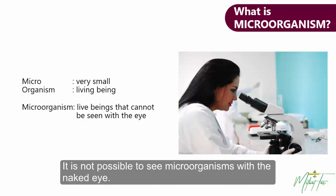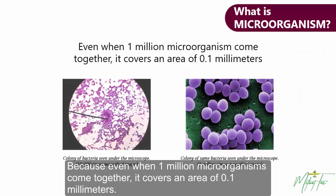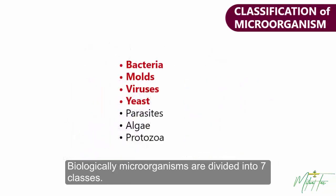It is not possible to see microorganisms with the naked eye. Because even when 1 million microorganisms come together, it covers an area of only 0.1 mm. These organisms can only be seen with the help of a microscope. Biologically, microorganisms are divided into 7 classes.